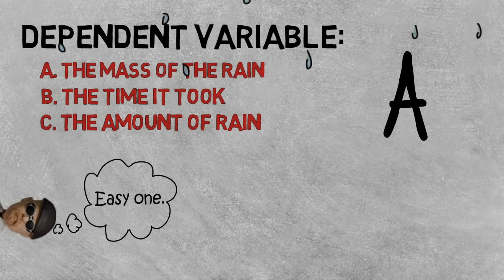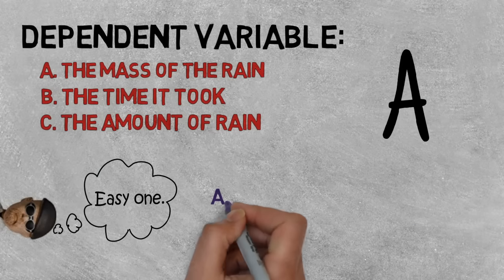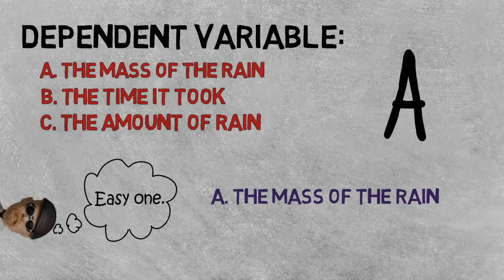The correct answer was A, the mass of the rain, because it depended on whether they were walking or running through the rain course.